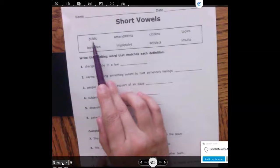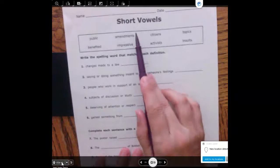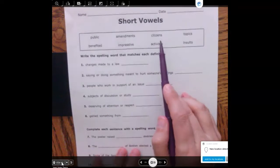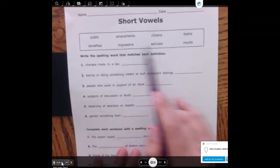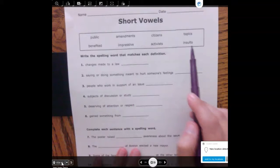We have the word public, amendments, citizens, topics, benefited, impressive, activists, and insults.